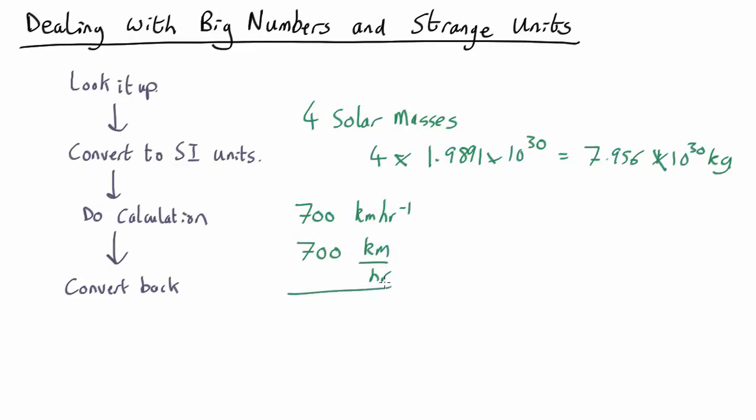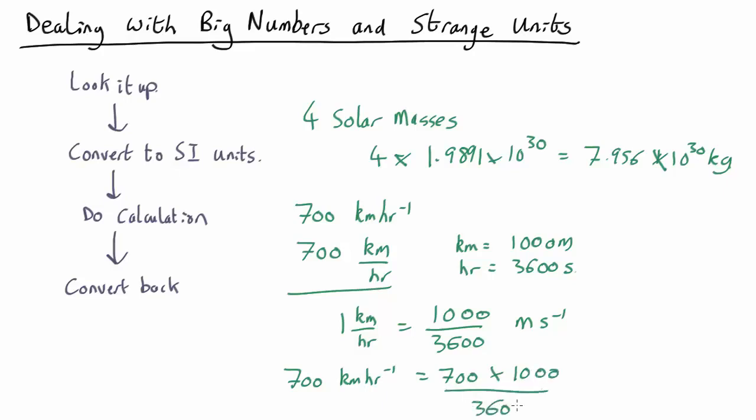If I gave you something in those units, you'd still have to convert into SI units. The SI unit for speed is meters per second. So to convert that, you'll notice that a kilometer is 1000 meters. An hour is 60 times 60, which is 3600 seconds. So one kilometer per hour is 1000 over 3600 meters per second. So 700 kilometers per hour is just 700 times 1000 over 3600, which is equal to 194.4 meters per second.